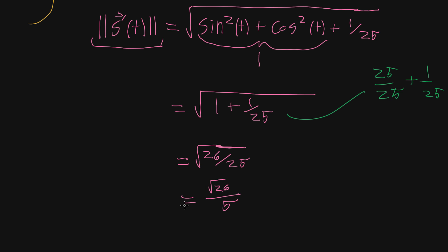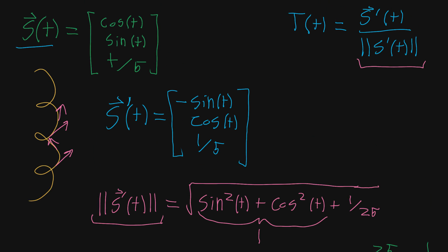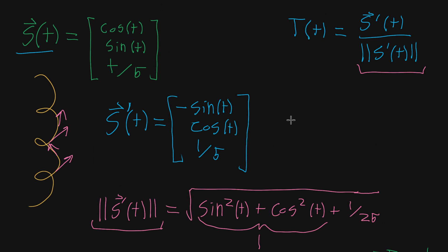It's quite lucky that this came out to be a constant, because with the more general formula, it's often pretty nasty. But in this case, it's just a constant, which is nice. For the unit tangent vector function, we just take the derivative function and divide each term by that magnitude. So it's going to look almost identical.